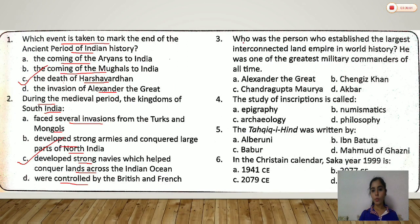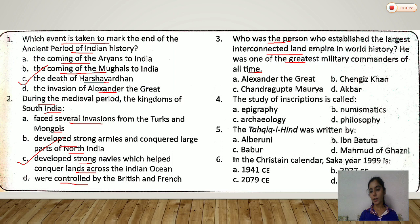Third question: who was the person who established the largest interconnected land empire in world history? He was one of the greatest military commanders of all time. The correct option is B.